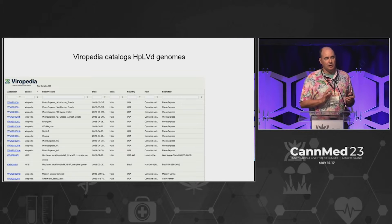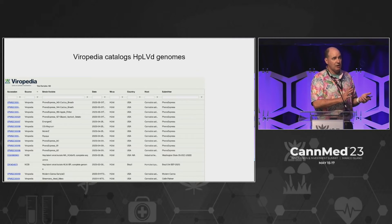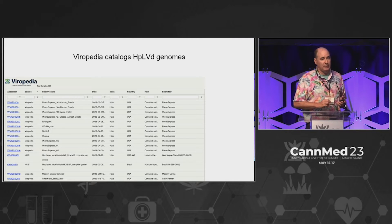The first part I want to touch on is how much variation is there in the population with hop latent viroid. What are we dealing with? Are we dealing with something like COVID that's changing every three months, or are we dealing with a fairly consistent viroid?